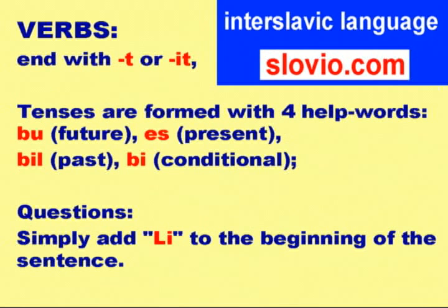Verbs end with T or IT. Tenses are formed with four helper words: BU (future), ES (present), BIL (past), BI (conditional). Questions: simply add LI to the beginning of the sentence.